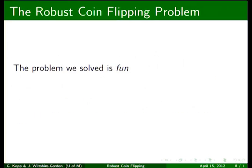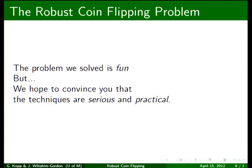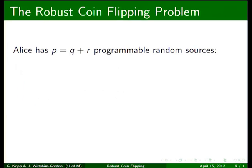Okay, so now on to the robust coin flipping problem. Alice has p = q + r programmable random sources. A programmable random source is a little machine. Alice will give it a finite list of real numbers. The real numbers add up to one. The machine interprets this list as a finite probability space. And then Alice can use the machine to sample that finite space. So this is slightly different from the example at the beginning. Alice is now able to program probability distributions into the coins.